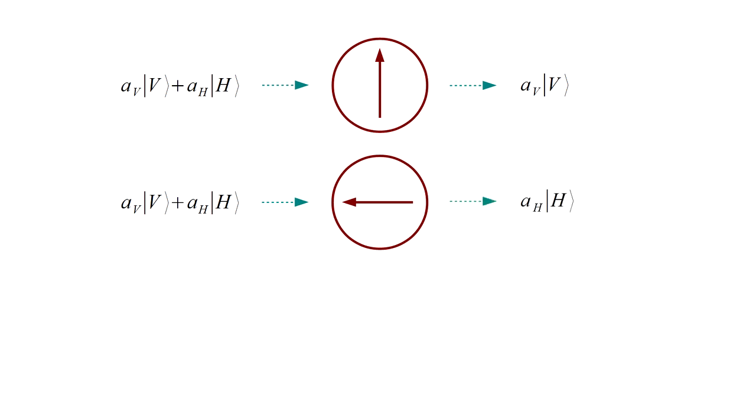When a field with any combination of v and h polarization illuminates a vertically oriented filter, only the v component passes through. The h component is blocked or filtered out. Likewise, if the filter is horizontally oriented, only the h component passes through.